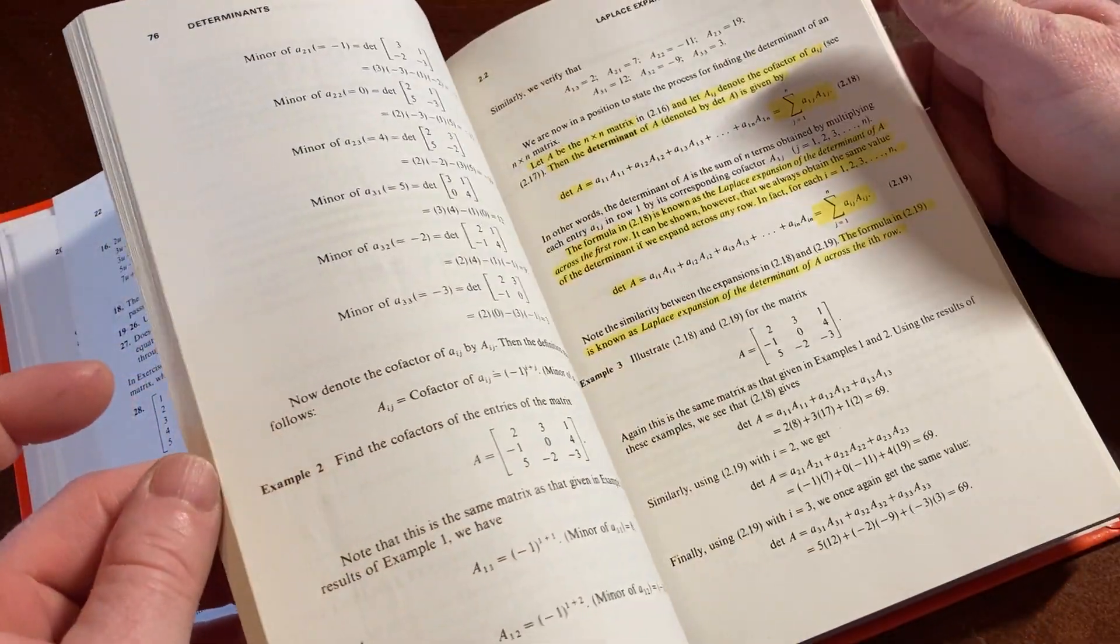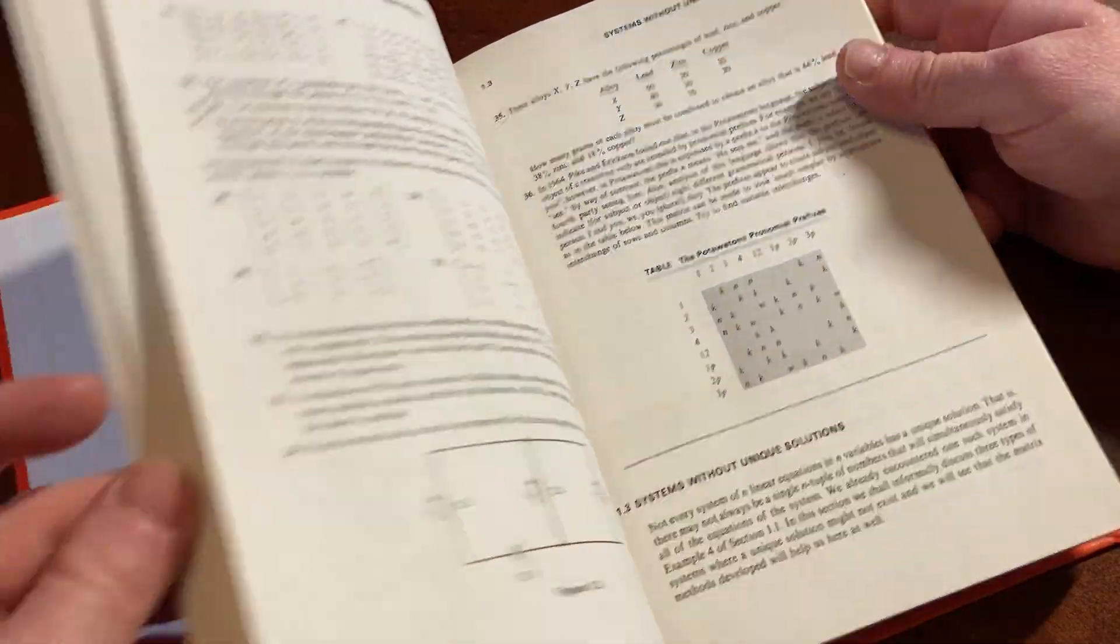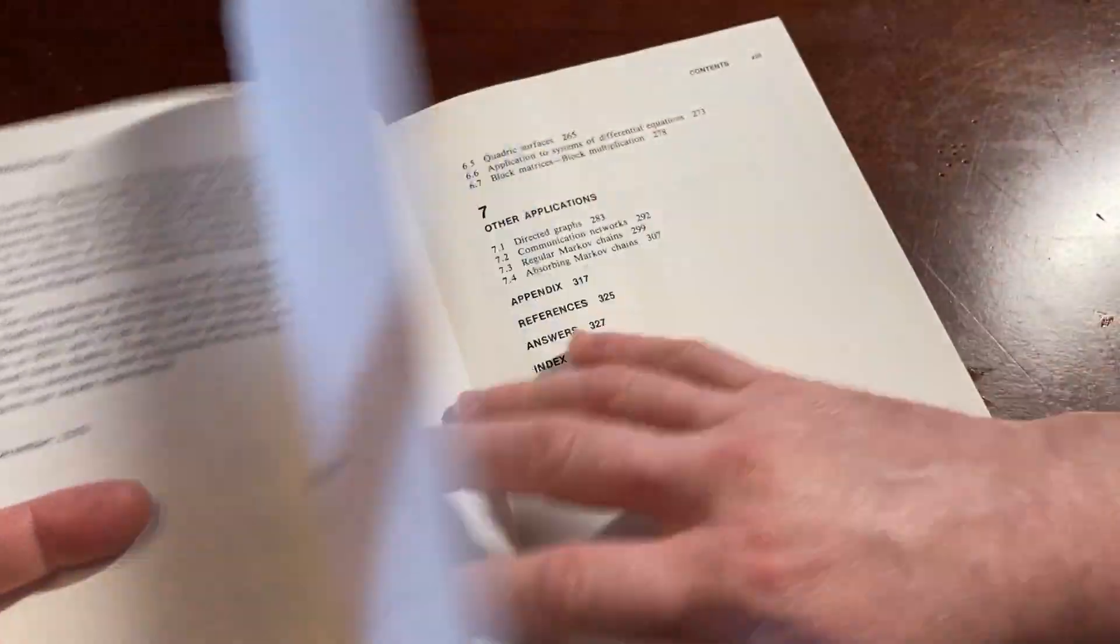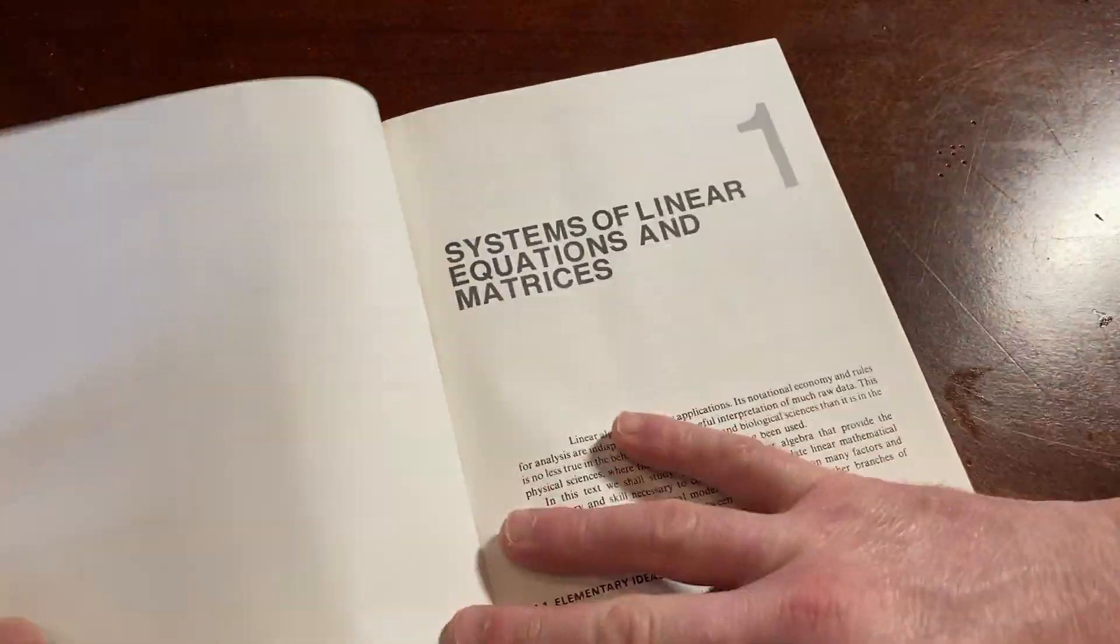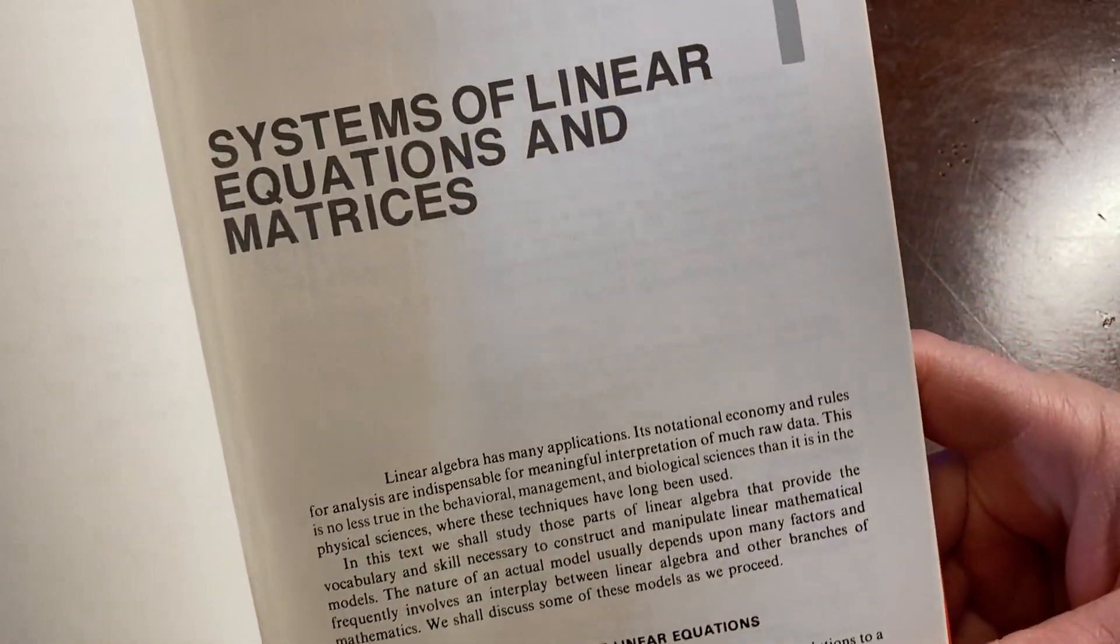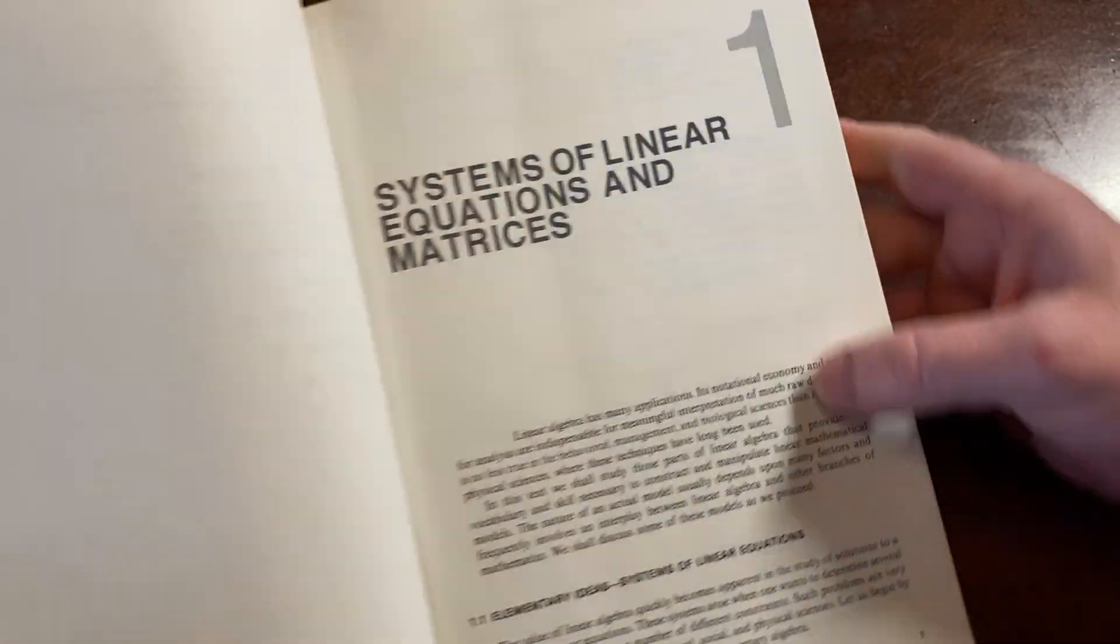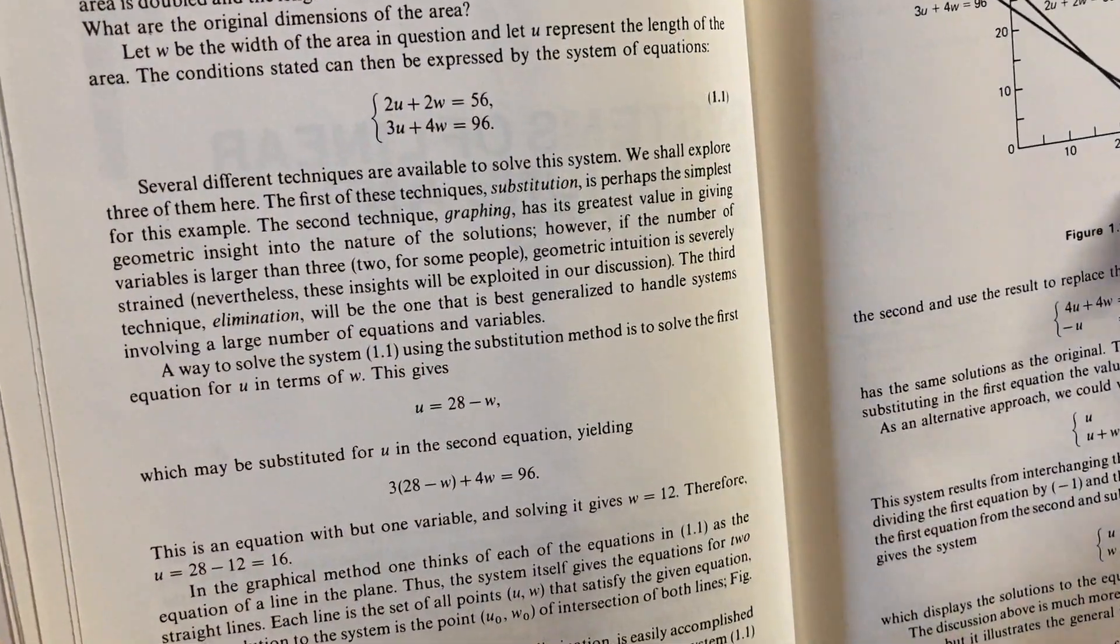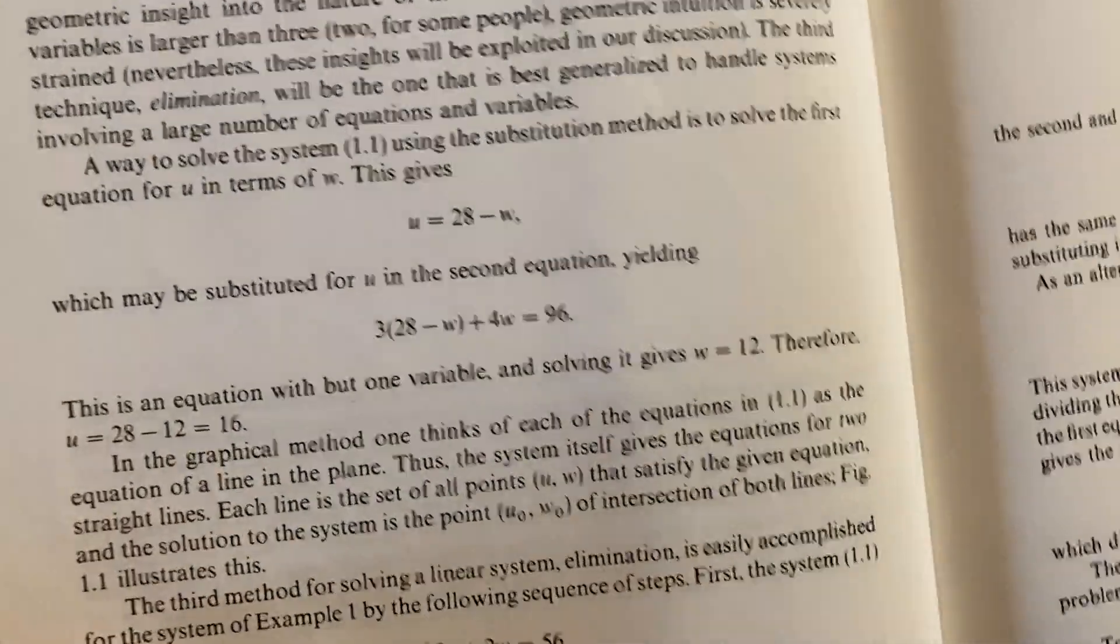So linear algebra is something that you could learn as long as you know some basic math. I mean, look how it starts. It starts with the very basic stuff. Let's take a look at it. Elementary ideas, systems of linear equations. This is the first chapter.